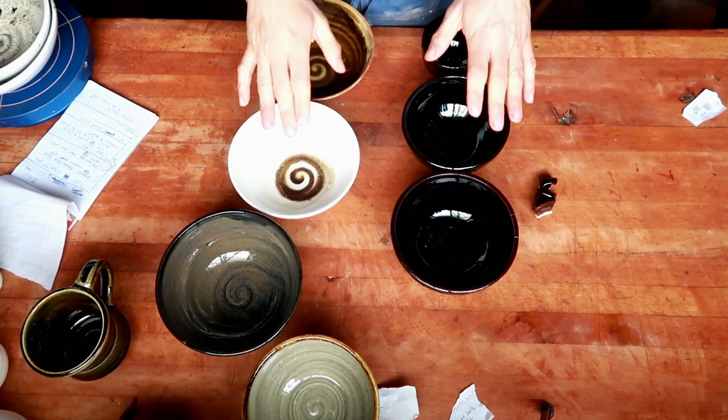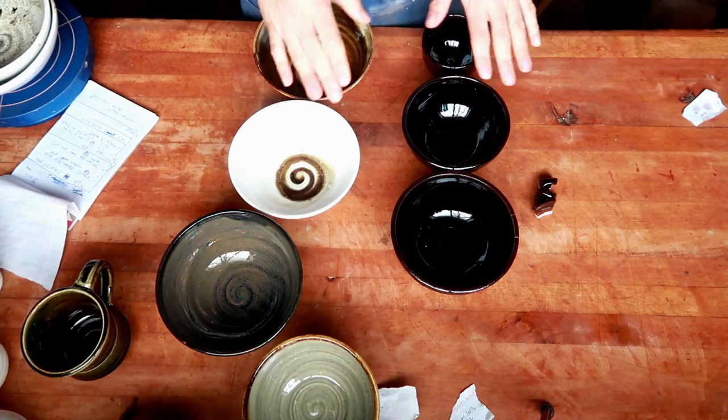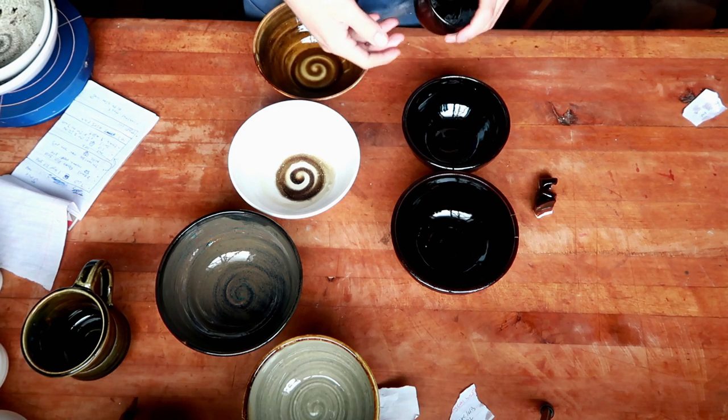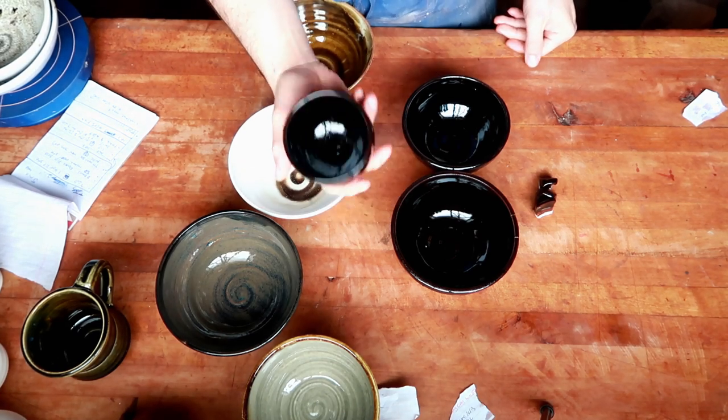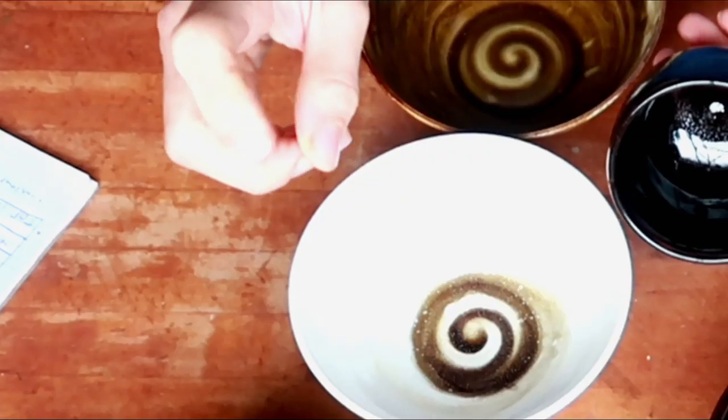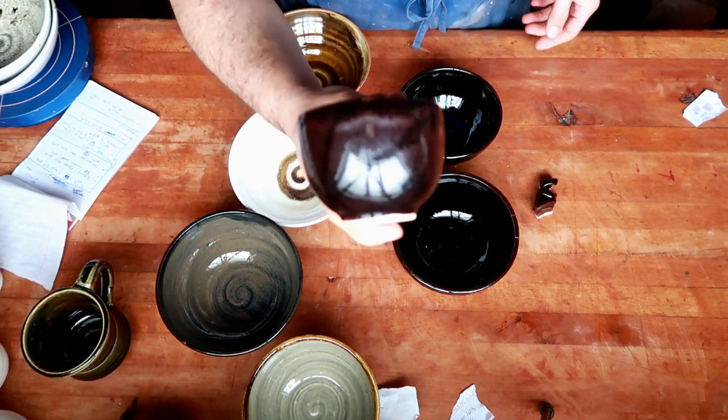I'm actually really happy with the results of how this came out, because at first glance, this new oil spot red recipe kind of looks like it was a dud. I opened my kiln, and I saw this black here, and I was like, cool, it just makes black. That's great. But, oh, no, no, no, mon ami. This is why we look closely at things.